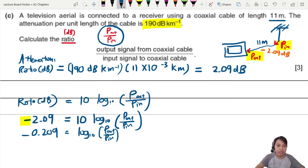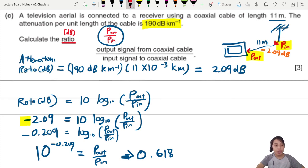And we can say, what's the base? Base 10. So we write 10 to the power of negative 0.209 equal to whatever is inside the bracket previously. So that will be P out over P in. What's the answer? 10 to the power of negative 0.209. I got on my calculator 0.618. So my final answer will be 0.618 as my ratio. This is three marks. First one is attenuation. You found the attenuation. That's your first.